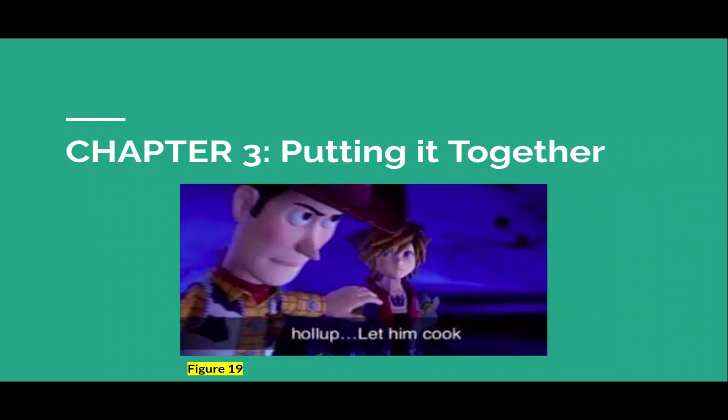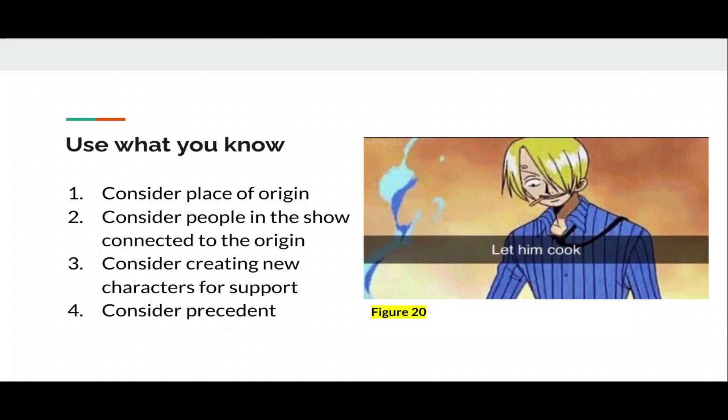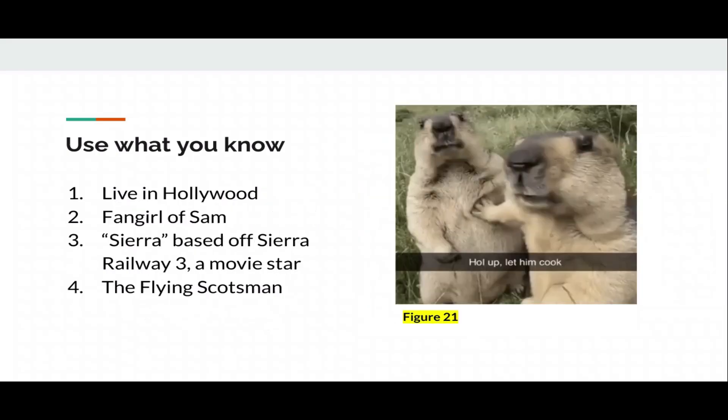This is the fun part. Chapter 3, putting it together. Let them cook. Use what you know. Consider place of origin. People in the show connected to origin. Consider creating new characters for support. And consider precedent. Consider the rule of the law of the land. Like think about it. An American views things slightly differently if they were placed in another scenario compared to a native. People in the show connected to origin, like people connected to that person from that old land. Like in America, that would affect their mentality. Consider creating new characters to show that they have a family or something. Or people they used to know. Or people they end up knowing who are connected to their old land. Give them a sense of familiarity. Consider precedent. Consider the current people in the world. Since she is from California, I chose to make her live in Hollywood. And since she's a goods engine, I imagine she's friends with Sam, which angers the other guys for some reason, which I think is funny. One of her siblings is the Sierra Railway 3 movie star. And I found this out on Tumblr. So I was like yo let's do it. I named it Sierra, based off the Flying Scotsman. Like how they didn't give much name into that. That was funny as heck.